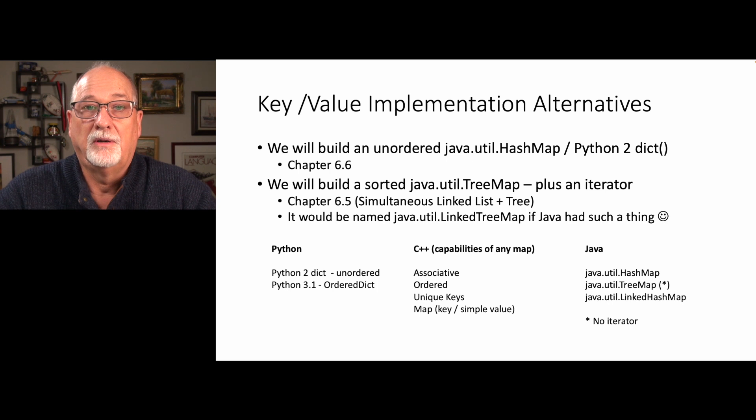We're going to have a map that is sorted, that's more like Java's tree map with an iterator. And it is sort of chapter 6.5 or section 6.5 of the book. And it is a combination of a tree map and a linked list map. But Java doesn't have such thing, which really kind of surprises me. They got a tree map and they got a hash map, but they don't have a linked tree map or a linked map.